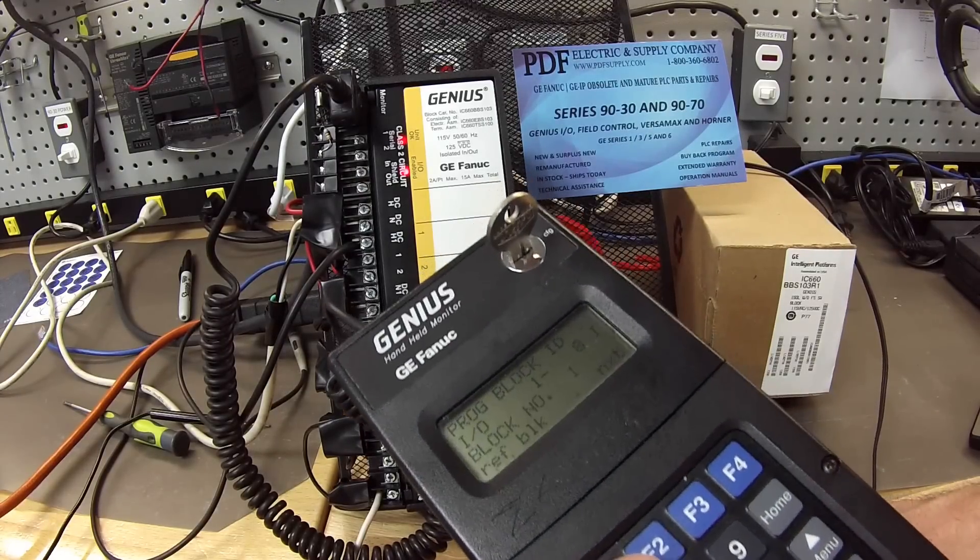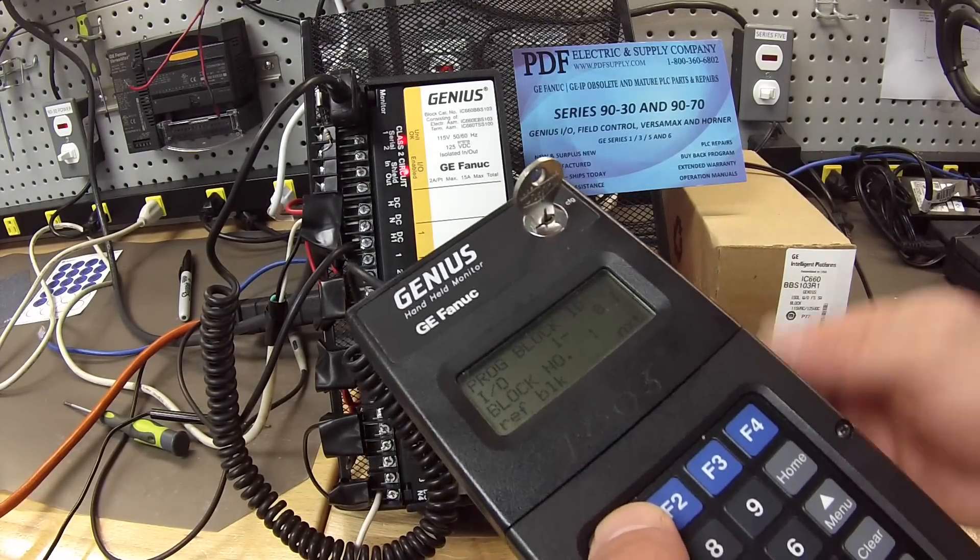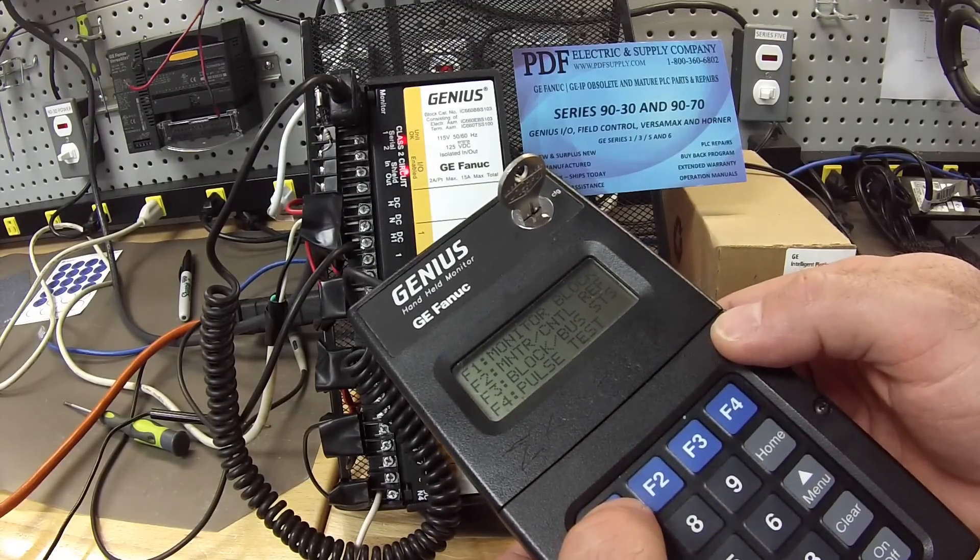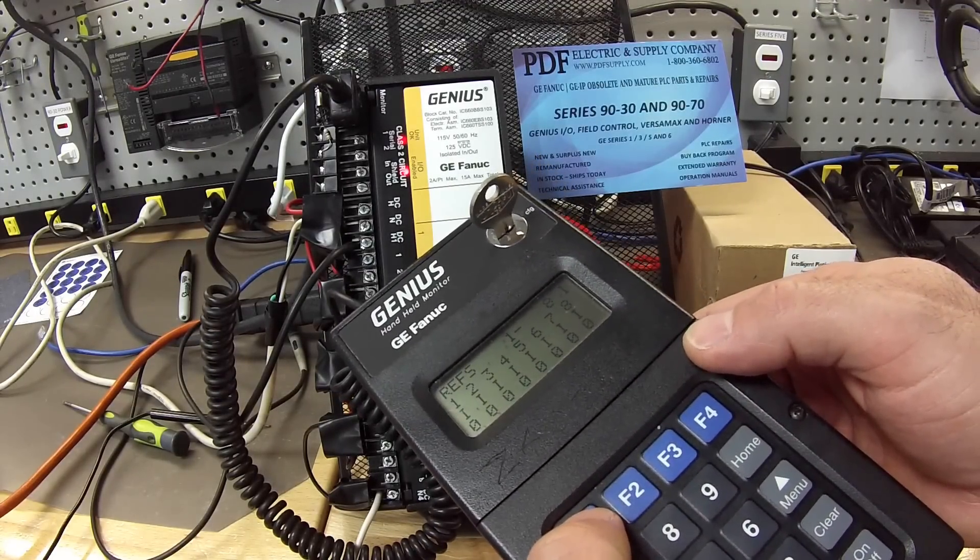Alright. So the next thing is we're going to test the inputs and outputs. I'm going to go to Home, F2 for Analyze, F1 to Monitor Block.